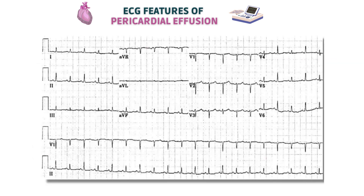Here is an example ECG from a patient with a large pericardial effusion. You can appreciate the low-voltage QRS complexes, especially in Lead 3 and AVL. Looking at the rhythm strip in Lead 2 at the bottom of the ECG, you can also see that alternate QRS complexes are short and tall. This is a classical example of electrical alternans.